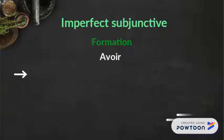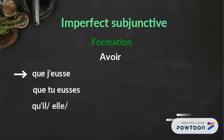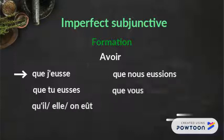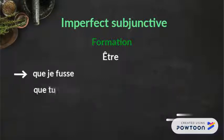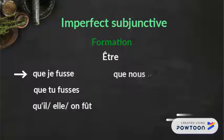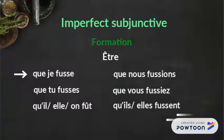AVOIR at the imperfect subjunctive: que j'eusse, que tu eusses, qu'il/elle/on eût, que nous eussions, que vous eussiez, qu'ils/elles eussent. ÊTRE at the imperfect subjunctive: que je fusse, que tu fusses, qu'il/elle/on fût, que nous fussions, que vous fussiez, qu'ils/elles fussent.